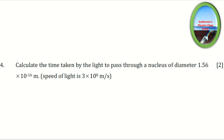Question 4 (2 marks): Calculate the time taken by light to pass through a nucleus of diameter 1.56 × 10⁻¹⁶ meters. The speed of light is given as 3 × 10⁸ meters per second.